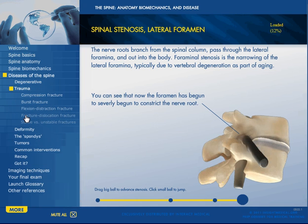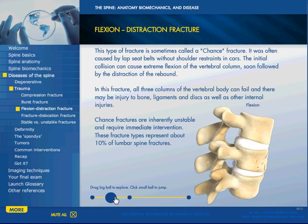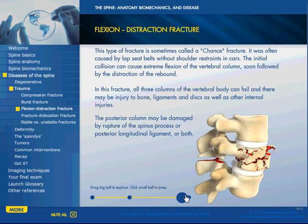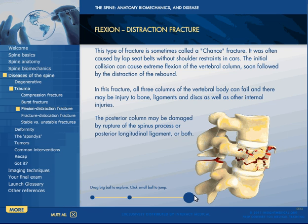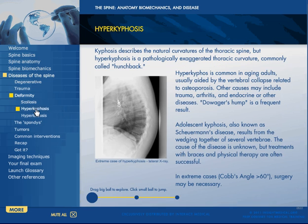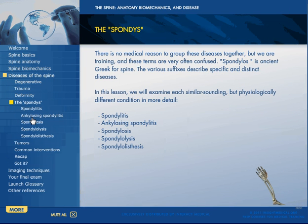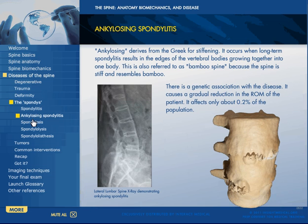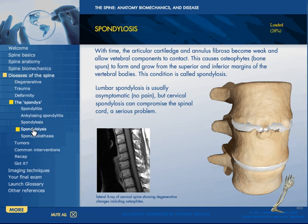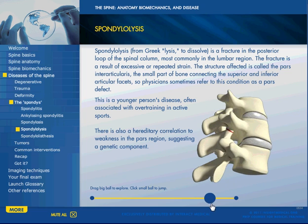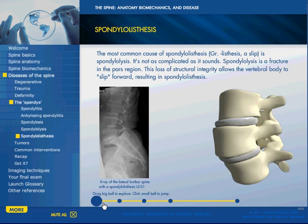We cover trauma — for example a flexion distraction fracture — and we go through it illustrating how we arrive at such a condition and what defines it. We can jump down to deformities: scoliosis, hyperlordosis, and again we can drag to compare different images. The spondies are interesting because they're not related to each other — they just have a similar name but are often confused — so we broke them up. We show the different cases with 3D rotating views.